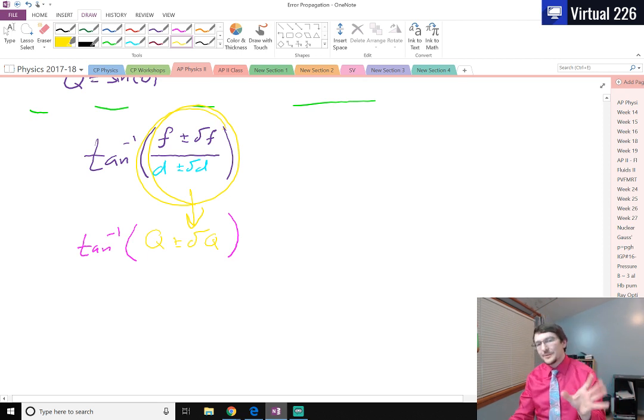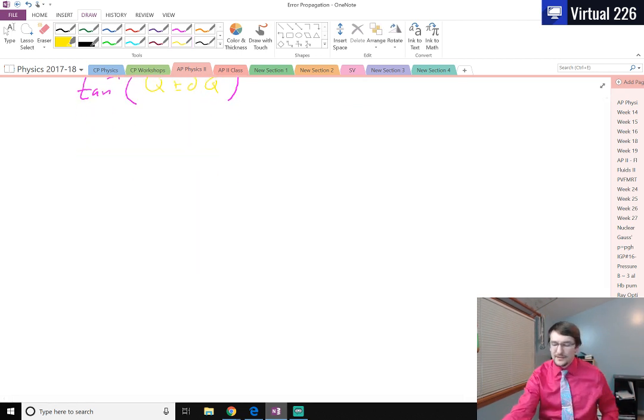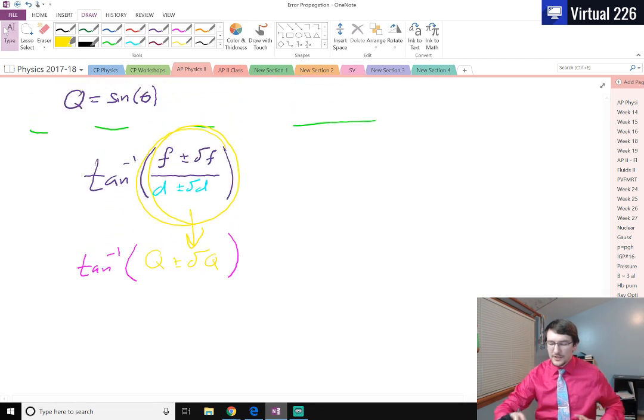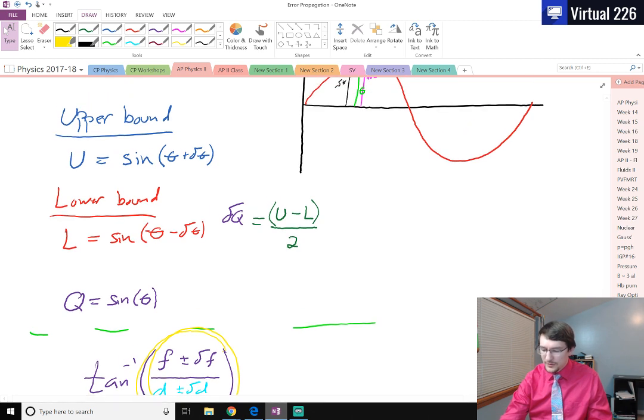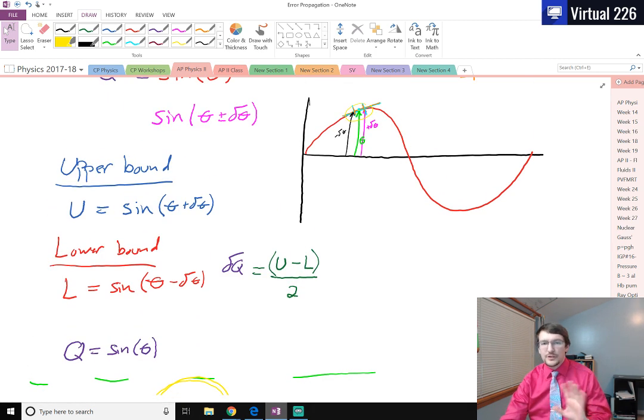So we need to be a little bit careful whenever we use these functions, especially when we're passing in functions, different values that we need to divide. But if we just do one error propagation followed by the next, we can do that pretty easily. And just using this idea of the upper and lower bounds for smooth continuous functions that we can assume at small regions forward and backwards are linear, we can use this method right here.